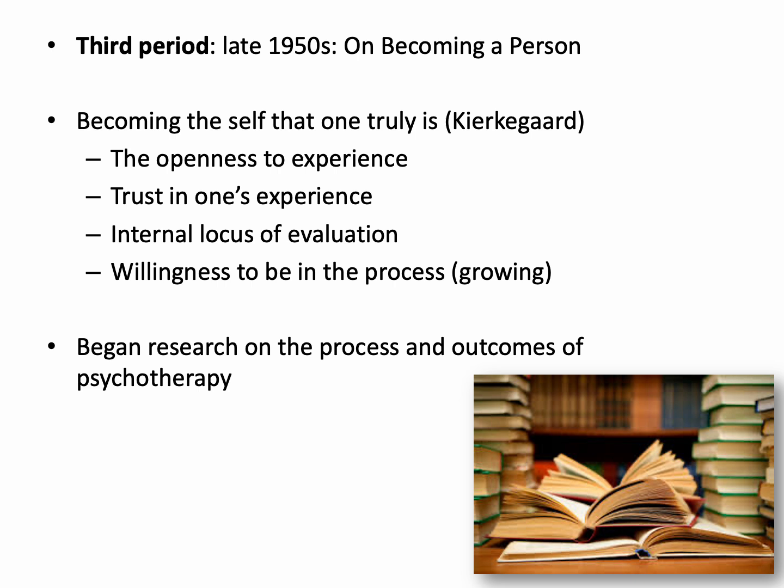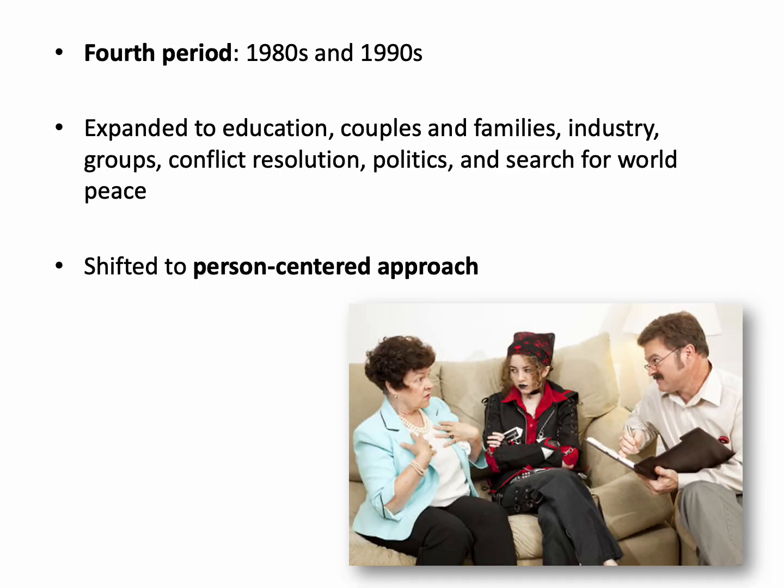He also began research on the process and outcomes of psychotherapy. In the fourth period, the 1980s and 1990s, he expanded person-centered therapy into education, couples and family counseling, industry (basically work), groups, conflict resolution, politics, and the search for world peace. It shifted to the term person-centered approach or person-centered therapy, which is what we call it today — although you'll hear it called Rogerian therapy. He emphasized we're talking about client-centered, not therapist-centered.